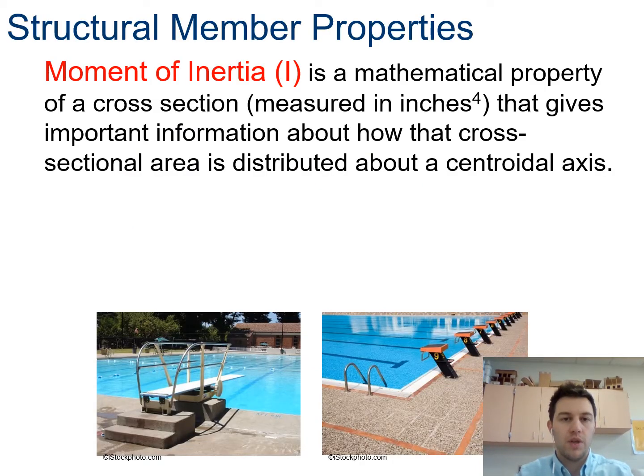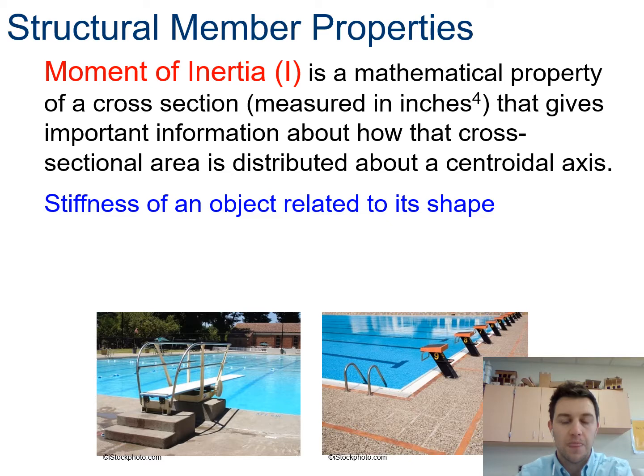So before we, where we're going to start is talking about moment of inertia. That is symbolized by the letter I and it is a mathematical property of a cross-section that gives important information about how that cross-sectional area is distributed about a centroidal axis. So basically it's saying when I calculate this using the math that we're going to be shown here, our units will be in inches to the fourth. And what it's basically saying is depending on how my object is shaped, that tells me how much or how stiff it is.